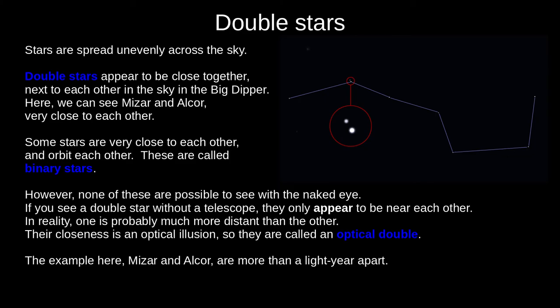Stars are spread unevenly across the sky, and sometimes we see two next to each other. These are called double stars. However, they're not really next to each other, as they are at different distances from us, such as Mizar and Alcor in the Big Dipper, which are more than a light year apart. Some stars are actually next to each other, in orbit around each other — these are called binary stars. However, these are too close for the human eye to distinguish, so any double stars you see without a telescope are called an optical double.